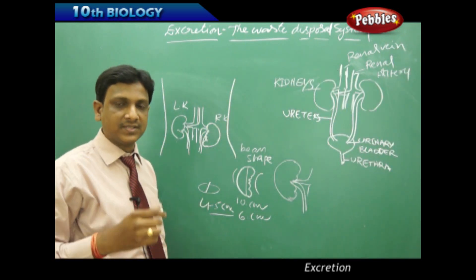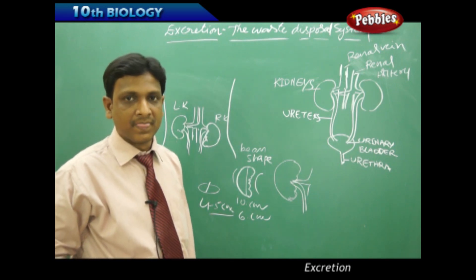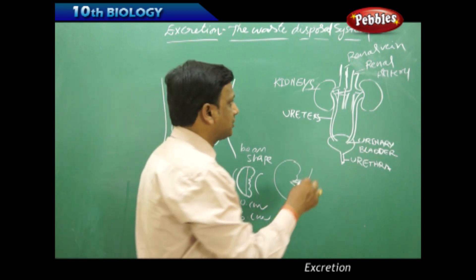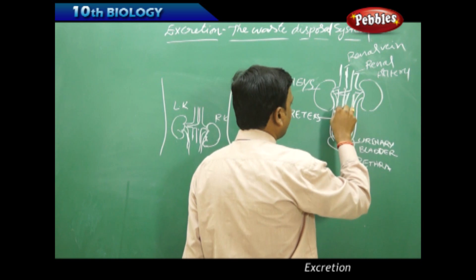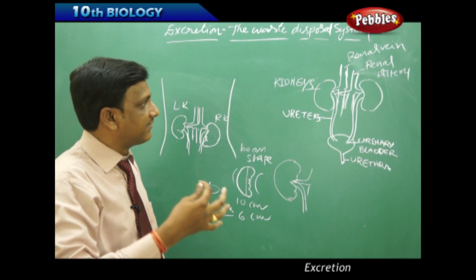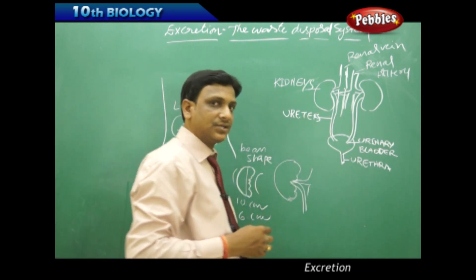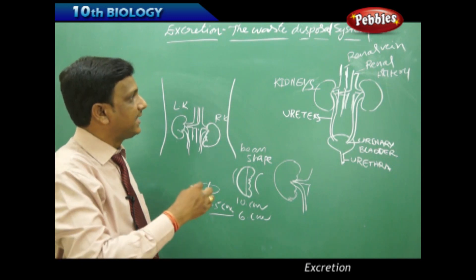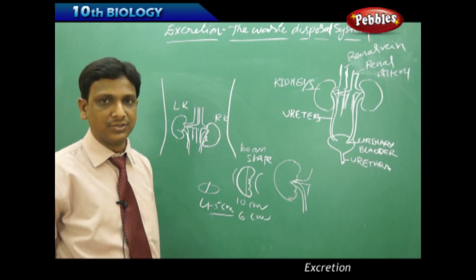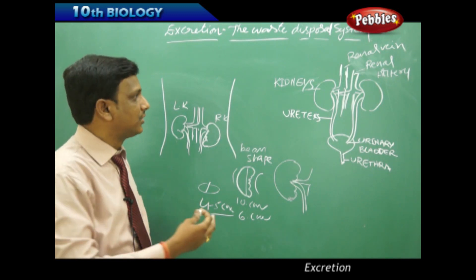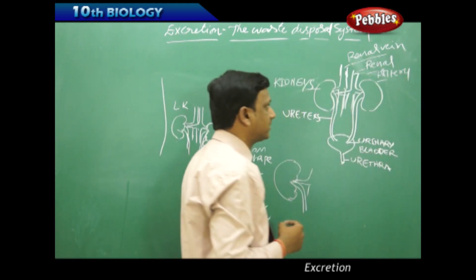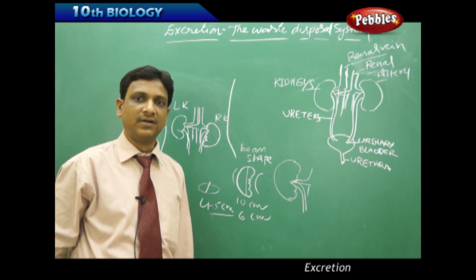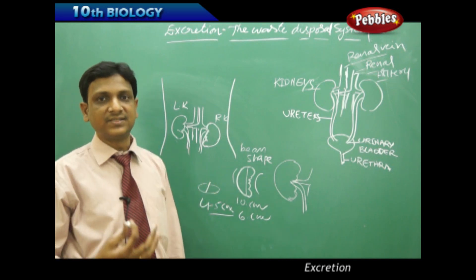The renal artery carries oxygenated blood containing toxic materials into the kidney, where purification takes place. After purification, the blood containing carbon dioxide — with other waste materials filtered out by the kidney — is carried away by the renal vein back to the heart for pumping to the lungs. The kidneys are thus connected to two major blood vessels — the renal artery and renal vein — for the process of purifying blood and clearing nitrogenous waste, excess salt, and excess water.